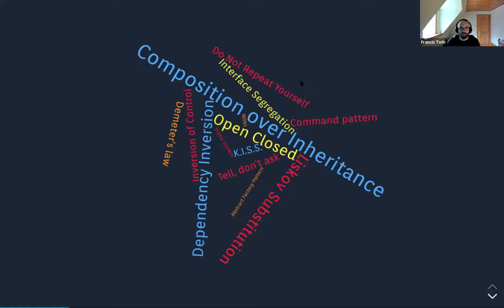We tend to forget this whenever we teach design. Instead, we overrun people with thousands of principles without actually conveying what ties them all together. If you think about it, all those practices and guidelines share some common ideas which form a set of fundamental guidelines required to write good software systems. In the next slides we'll attempt to sum up these ideas and come up with three main principles which I think are really critical when it comes to software design in general.